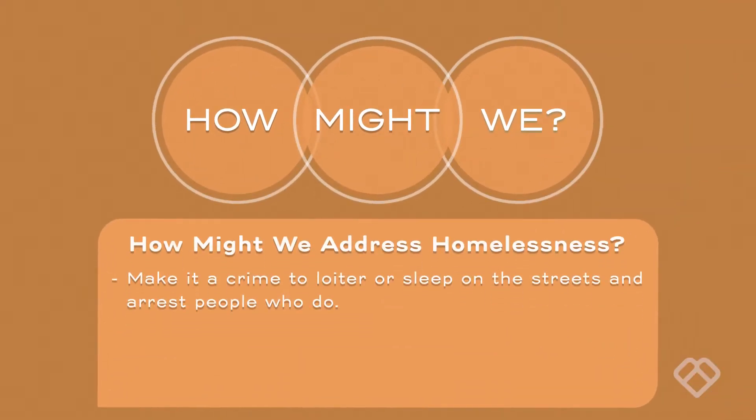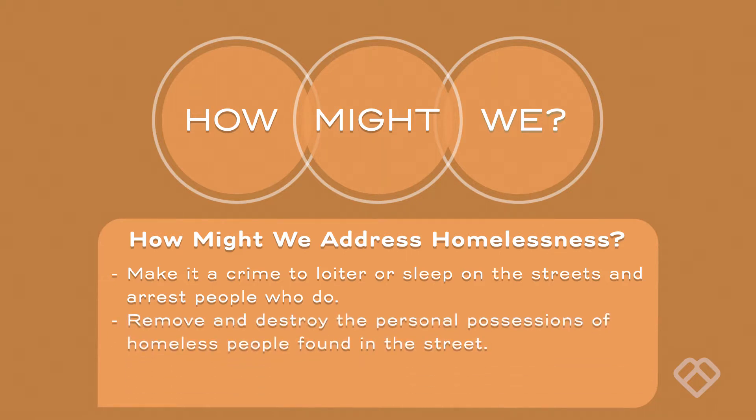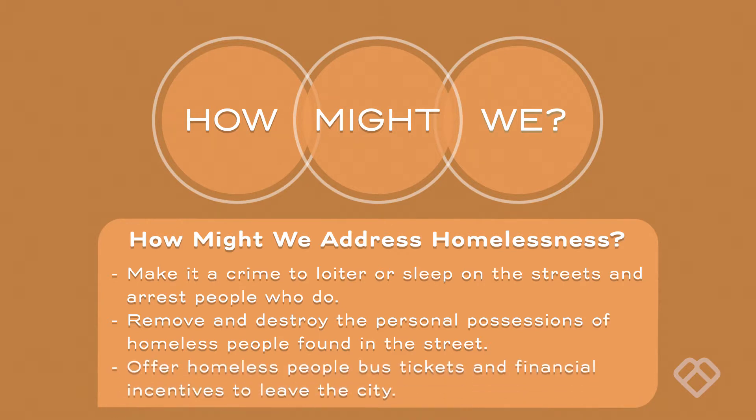Suppose we did some 'how might we's to solve that problem. We might come up with: make it a crime to loiter or sleep on the streets and arrest people who do; remove and destroy the personal possessions of homeless people found in the street; or offer homeless people bus tickets and financial incentives to leave the city. We're going to assume that our philanthropists have decided not to tackle the costs to the city and other residents as an independent problem, but rather to solve that problem by solving the problem of homelessness itself.